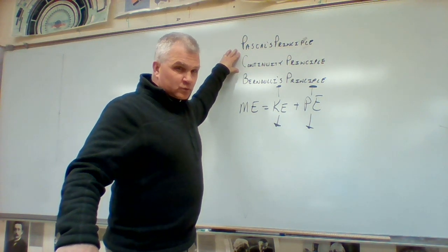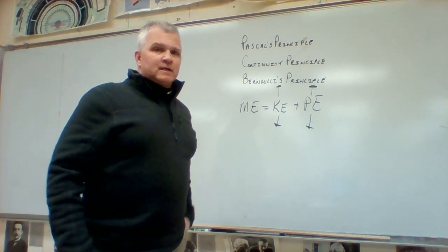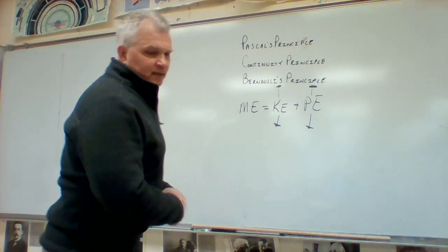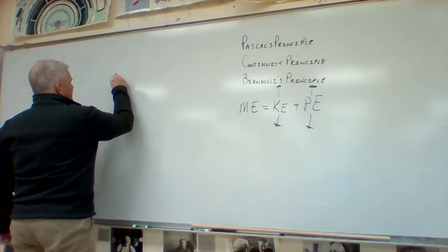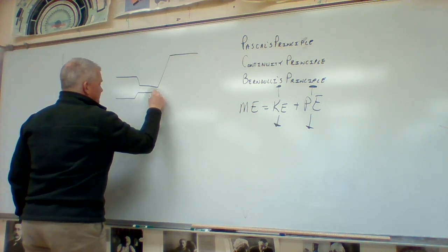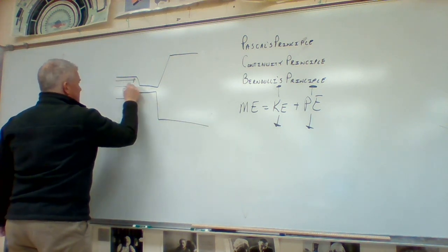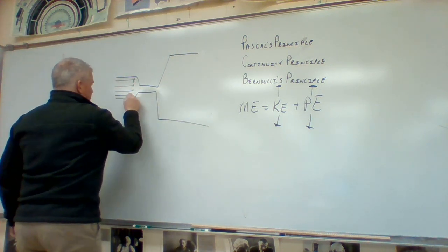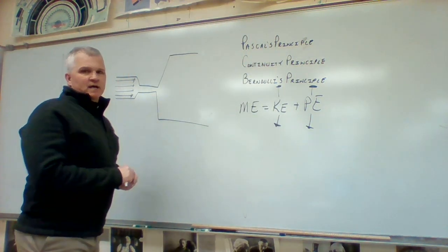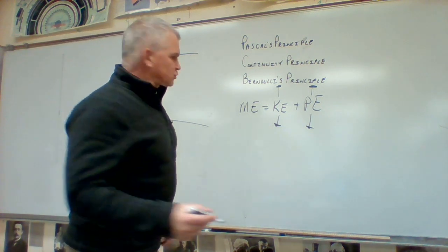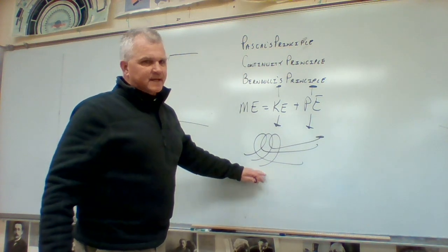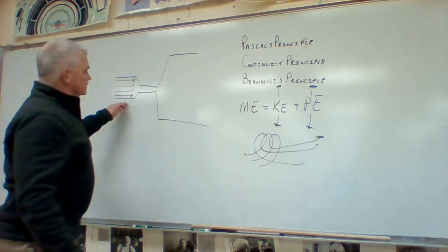The continuity principle has its roots in the law of conservation of matter — whatever fluid goes in has to come back out. These are streamlines: areas of steady fluid flow, referenced in question 31. An eddy would be a disturbed streamline, something swirling. We're only dealing with streamlines here.